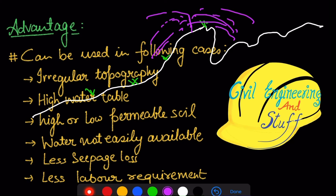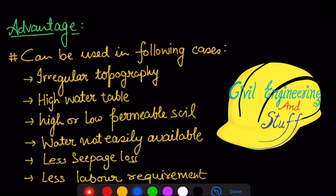If flooding irrigation methods had been used on irregular topography, the water would not have been evenly distributed throughout the land. Similarly, methods like basin flooding or furrow irrigation would have proved quite expensive in such terrain. Sprinkler irrigation is useful when the water table is very high, and in the case of high or low permeable soil this method proves very beneficial. It is also useful when we want to reduce liquid loss and in areas where water is not easily available.